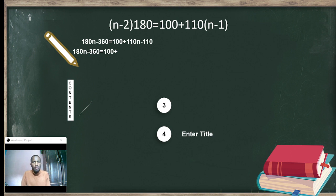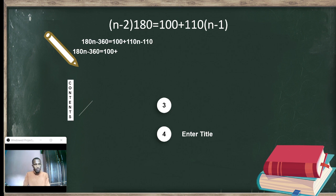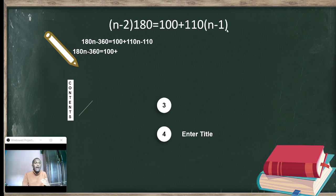So (n minus 2) times 180 equals 100 plus 110 times (n minus 1). Why? Because the one angle is 100 degrees, but the other angles are 110 degrees and we don't know how many there are. That's why we write 100 plus 110 times (n minus 1) — because one angle is different. I was about to make it (n minus 2), but since one angle is different at 100 degrees, I make it (n minus 1).